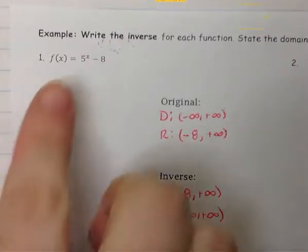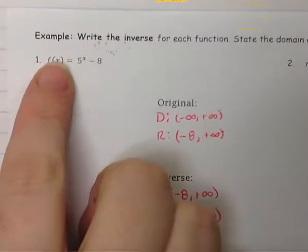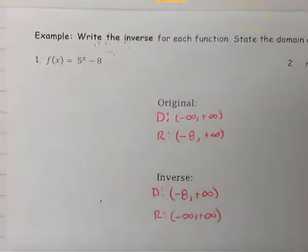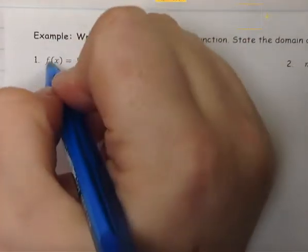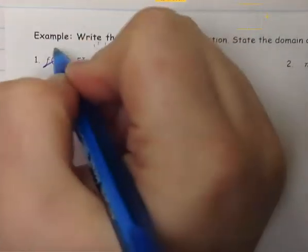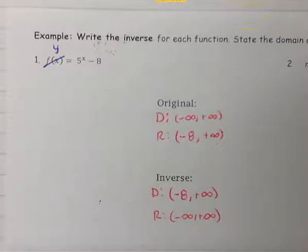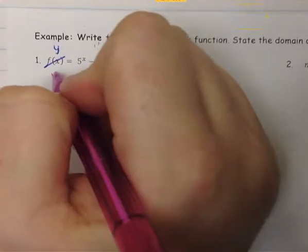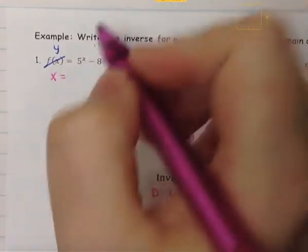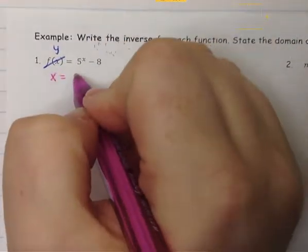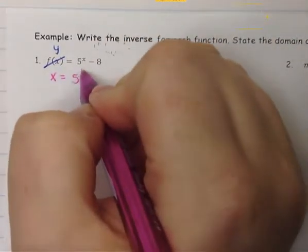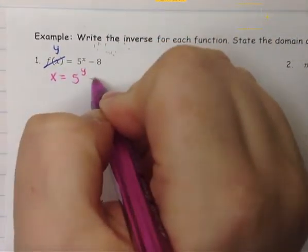Our first step in inverses is to always make sure f(x) says y. So I'm going to cross out f(x) and turn that into a y. Now we need to switch the x and the y — where I see y I'm going to put an x, and where I see an x I'm going to put the y. So I'm going to have 5 to the y minus 8.